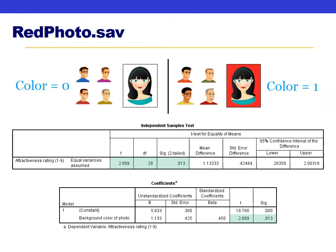When using a dichotomous predictor, beta tells us how different we expect the two groups to be. In this case beta equals 1.13, meaning men in the red group are expected to have attractiveness ratings 1.13 points higher than men in the white group — the same number as the t-test. Alpha equals 5.93, which tells us the expected average attractiveness rating for a man in the white group.